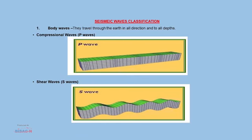Body waves are further divided into two categories: compressional waves and shear waves. P waves, or compressional waves, are fundamentally pressure disturbances which travel through a medium by alternately compressing and expanding it, where particle motion is parallel to the direction of wave propagation. Shear waves travel more slowly than P waves and are perpendicular in direction to compressional waves.